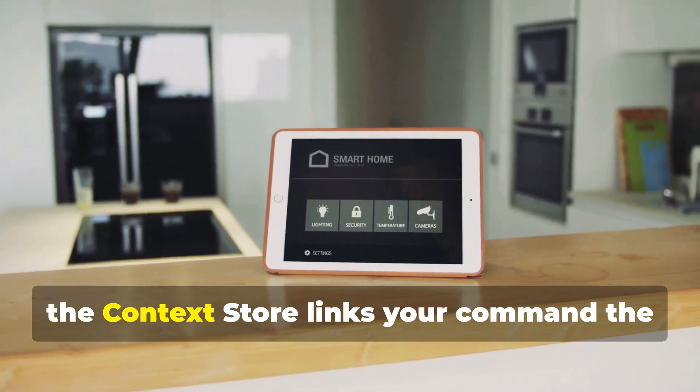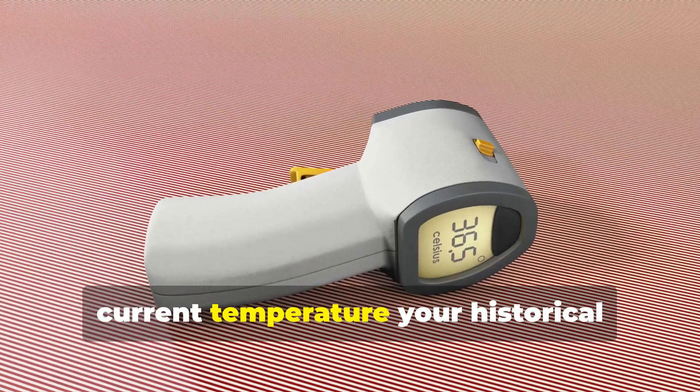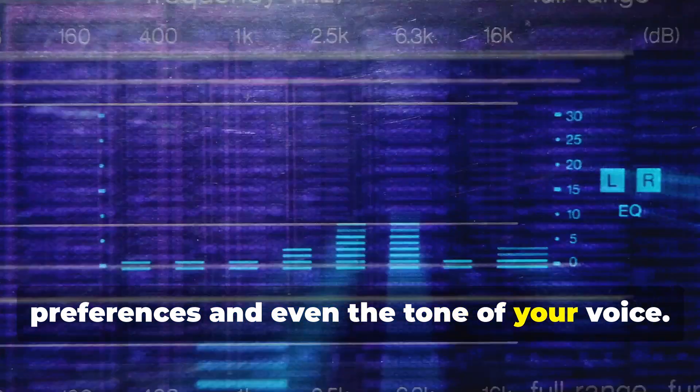For a smart home AI, the context store links your command, the current temperature, your historical preferences, and even the tone of your voice.